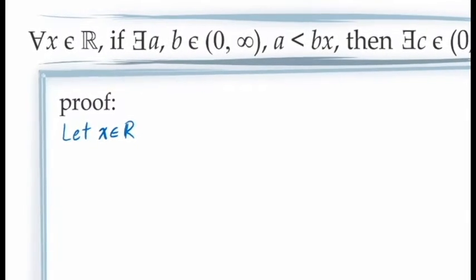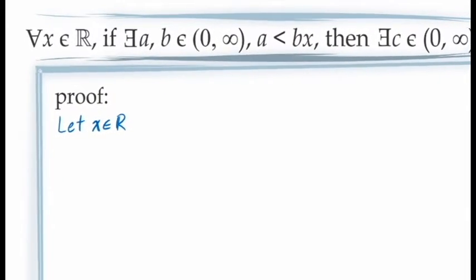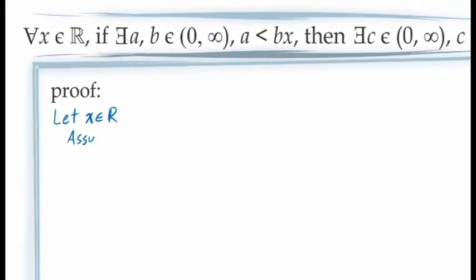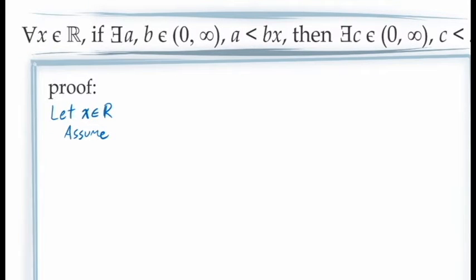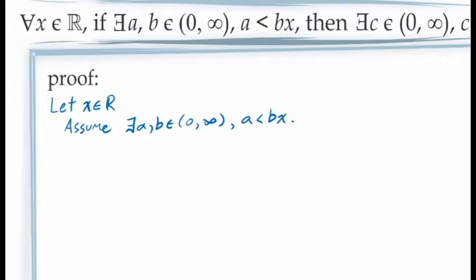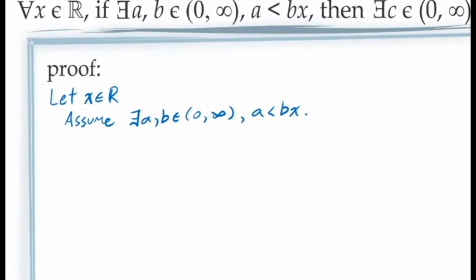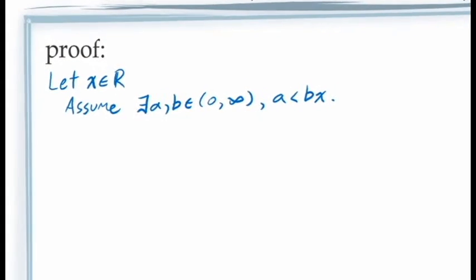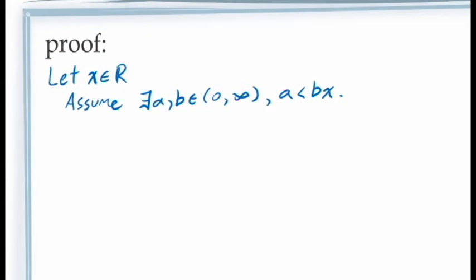Next, if we're going to be using a direct proof, we need to assume the full antecedent of our conditional statement. This reads: there are values of a and b in the interval from 0 to infinity for which a is less than b times x. Since this assumption contains an existential quantifier, we need to use the principle of existential instantiation.